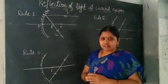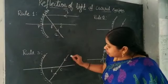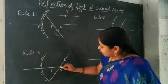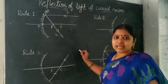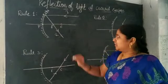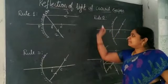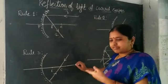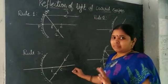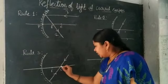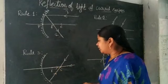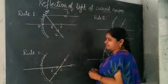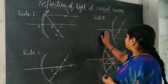Then we go to the third and final rule. The rays which are passing through the center of curvature, after reflection, will follow the same path — they retrace back. Pause here and draw the ray diagram. A ray passing through the center of curvature, even one lying on the principal axis, follows the same path after reflection. These are rules 1, 2, and 3, and they are all for concave mirrors. Convex mirrors we will learn in another session.